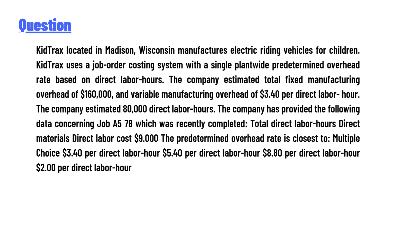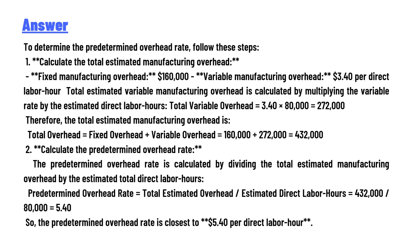To determine the predetermined overhead rate, follow these steps. Step one: calculate the total estimated manufacturing overhead — both fixed and variable. Fixed manufacturing overhead is $160,000. Variable manufacturing overhead is $3.40 per direct labor hour. Total estimated variable manufacturing overhead is calculated by multiplying the variable rate by the estimated direct labor hours: $3.40 × 80,000 = $272,000.